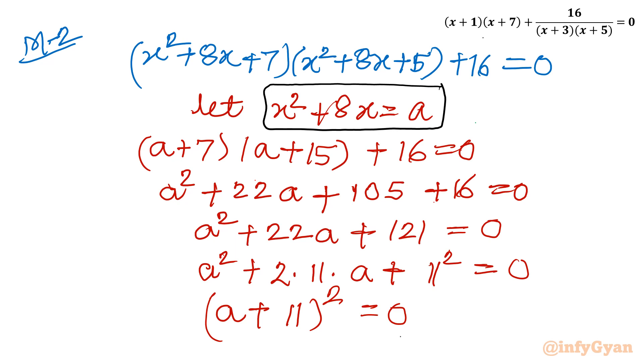You can see, once I will put a is equal to x square plus 8x, this equation and the method number 1 equation will match. So let us solve this equation. Remember, a is x square plus 8x. a plus 11 whole square equal to 0.